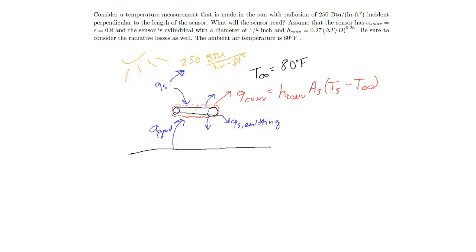Now we can do an energy balance on this control volume. The energy balance is simply E-dot-in equals E-dot-out — BTU per hour in must equal BTU per hour out.